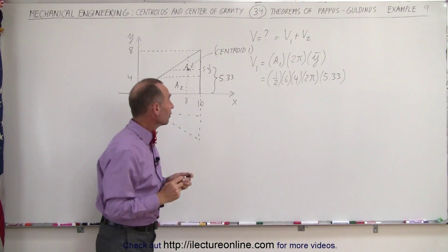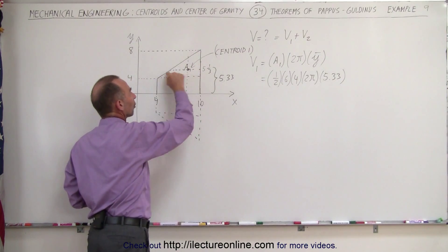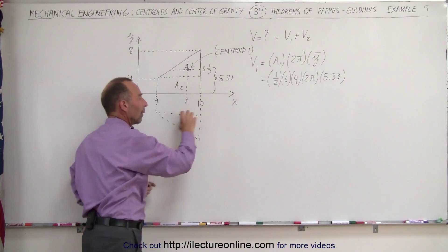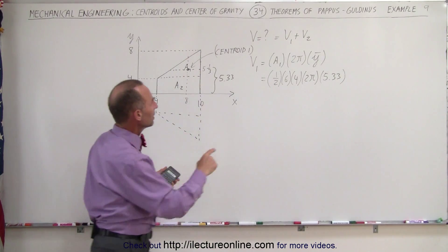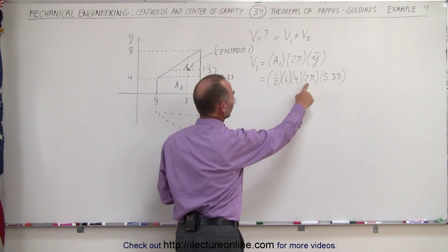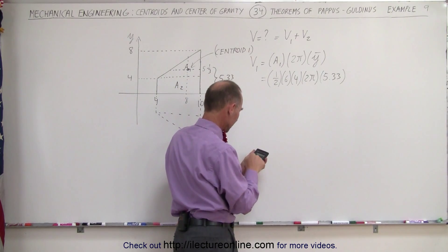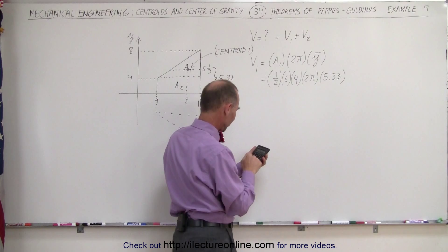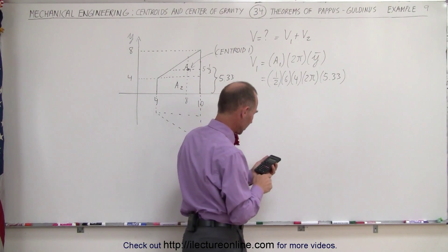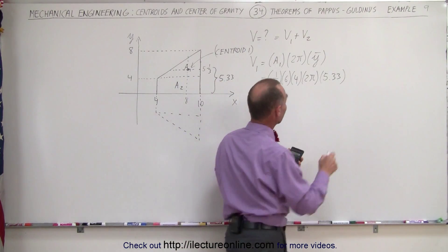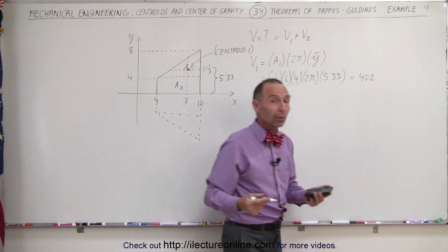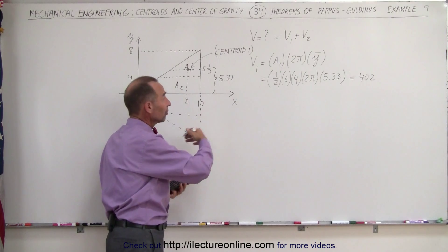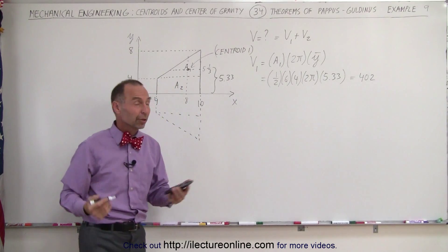And now we can find out what the volume is attributed to this portion rotated or revolved around the x-axis. That would be 3 times 4, that's 12 times 2 is 24, 24 times π times 5.3333 equals, that gives us 402. Whatever the units are, they would be cubic units. If this is in centimeters, that would be cubic centimeters, and meters would be cubic meters.